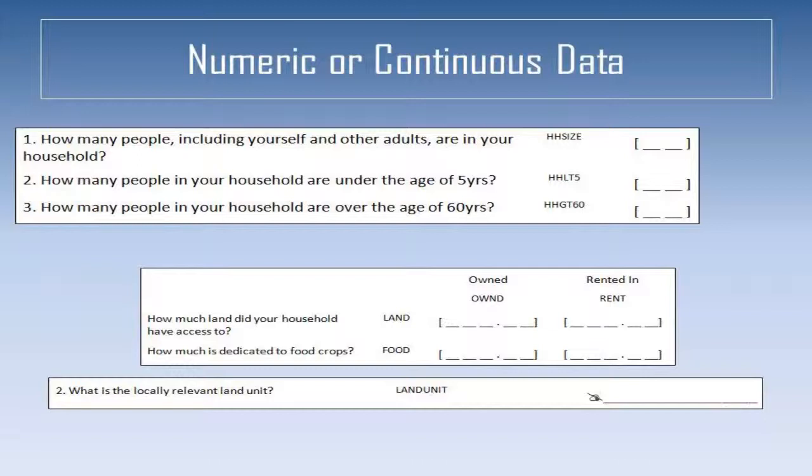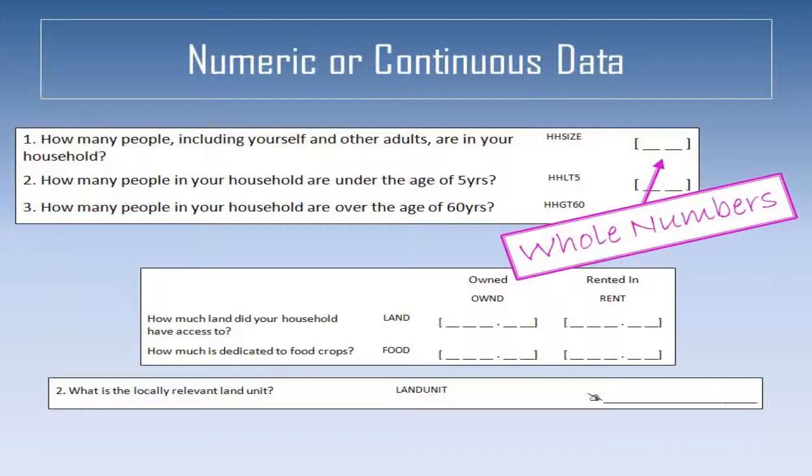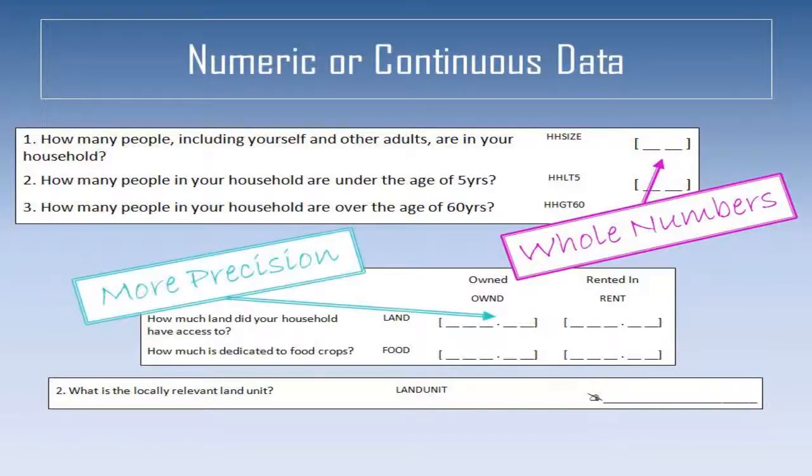Different types of numeric data will require slightly different formats to account for different levels of precision. For example, number of individuals or age should always be recorded as a whole number with no decimal places or fractions, whereas when measuring response such as plot size, it is usually appropriate to include a number of decimal places.